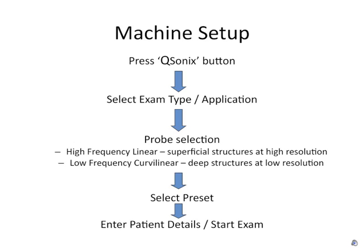You'll then be asked to select the appropriate probe. In general, this means using the linear high-frequency probe for relatively superficial scans, including the majority of regional anaesthesia techniques. This will give greater resolution near the surface, but with more rapid deterioration in image quality at depth. For deeper structures, select the low-frequency curvilinear probe, which allows better penetration at the cost of decreased resolution.